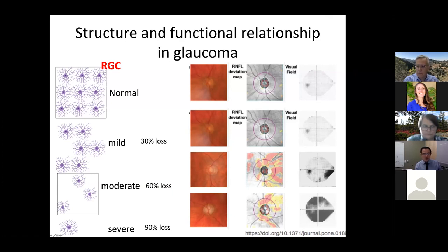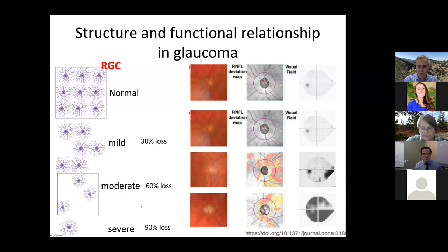In advanced disease, where you have say 90% ganglion cell loss, you've gone from nine ganglion cells covering one particular location in the field down to just one. In that setting, you can see significant thinning of the neural fiber rim and loss of ganglion cells by OCT imaging. The visual field may now show a dramatic decrease in peripheral vision, sometimes even encroaching on central vision.